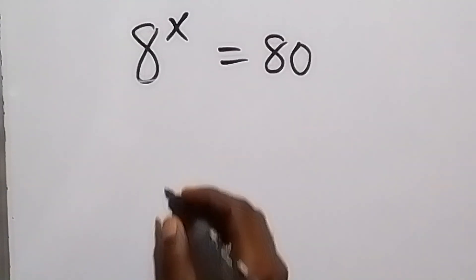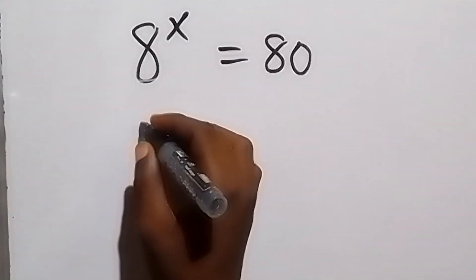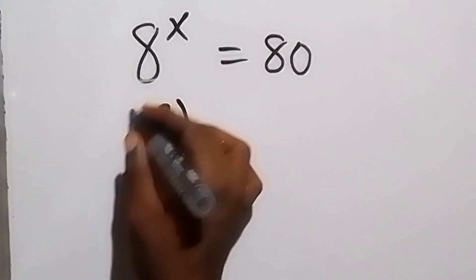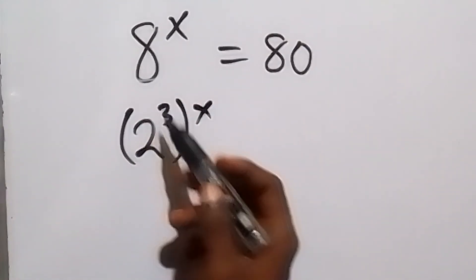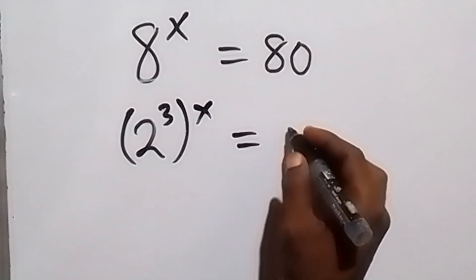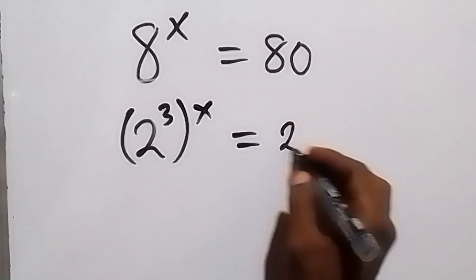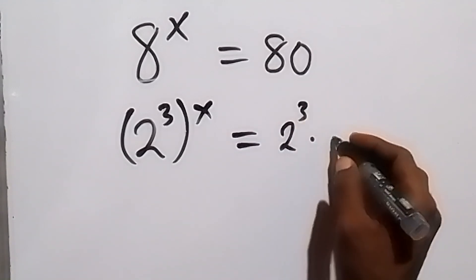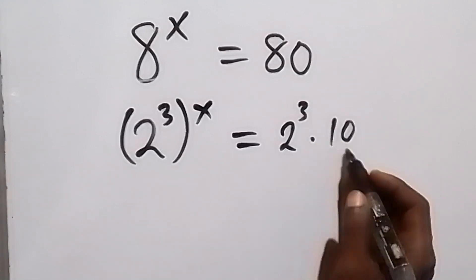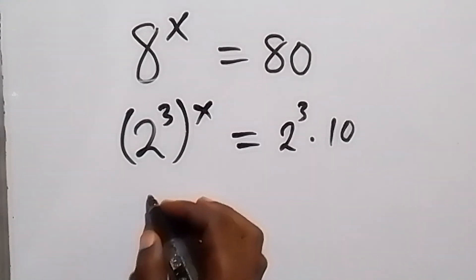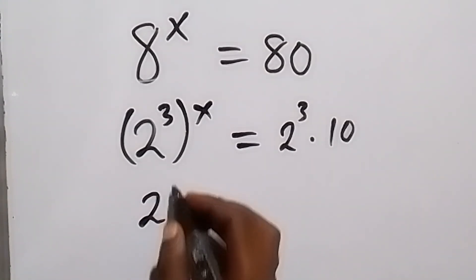For the second method, express 8 to base 2: that is 2 raised to the power 3, then raised to the power x — which is the same as 8 raised to the power x. We write the right side as 2 raised to the power 3 times 10, since 8 times 10 is 80.